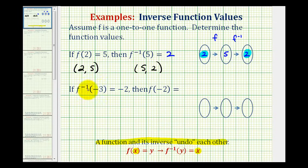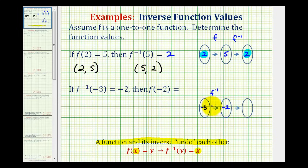Looking at our second example, we have f inverse of negative three equals negative two. We want to determine f of negative two. Negative three is the input into the inverse function when the output is negative two. Notice how now we're making negative two the input into f. And since these two functions undo each other, the final output will be negative three. Notice how the initial input and the final output are the same.